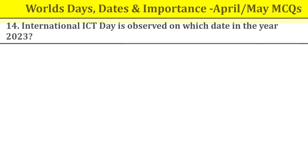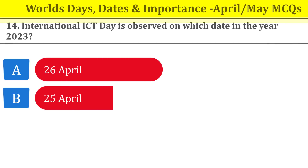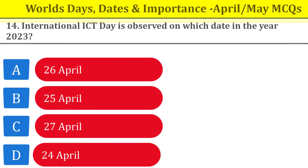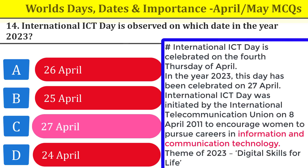Question number fourteen: International ICT Day is observed on which date? It is observed on 27th April. ICT stands for Information and Communication Technology. ICT Day was initiated by the International Telecommunication Union to encourage women to pursue careers in information and communication technology. The theme of 2023 is 'Digital Skills for Life.'